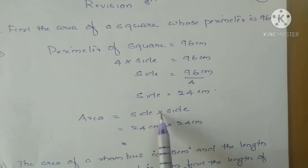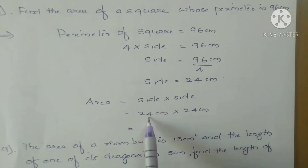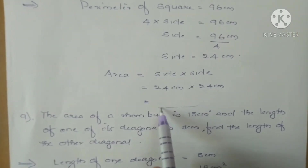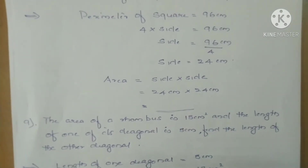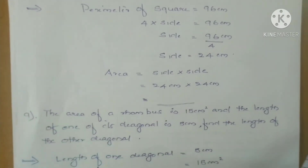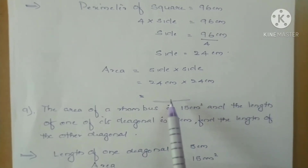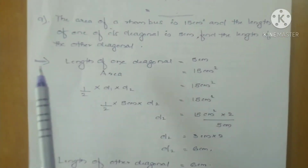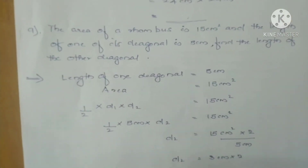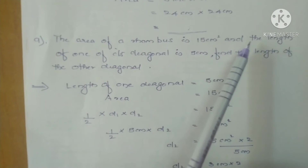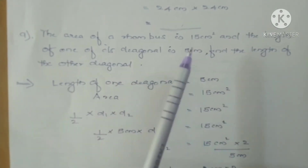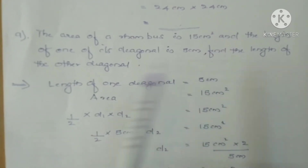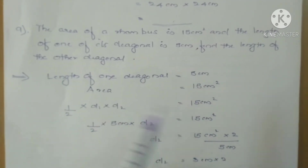Now, area equals side into side — that means 24 centimeters into 24 centimeters. You have to do this calculation; the final answer you have to find out. Now, question number 9: The area of a rhombus is 15 centimeters square, and the length of one of its diagonals is 5 centimeters. Find the length of the other diagonal.